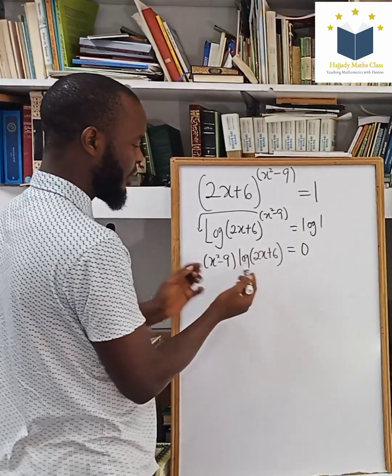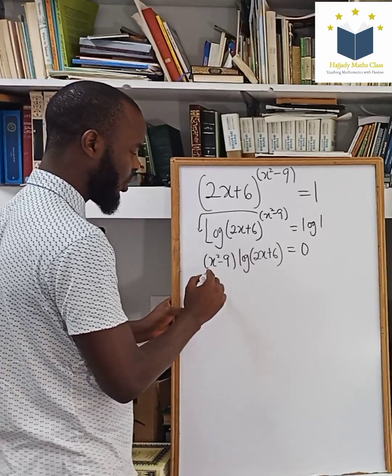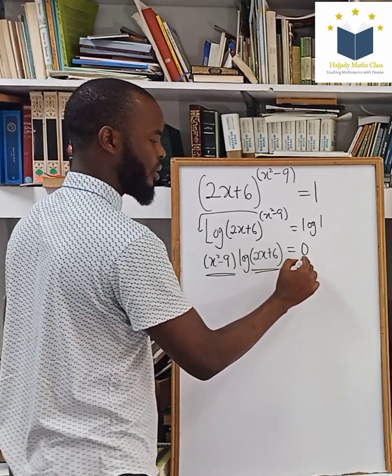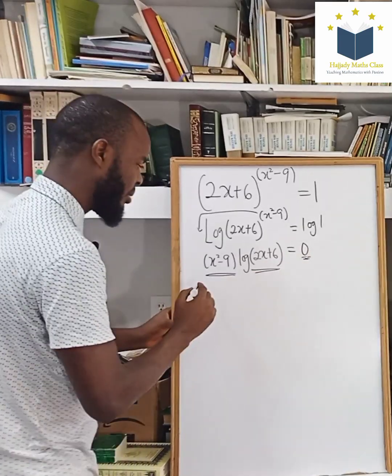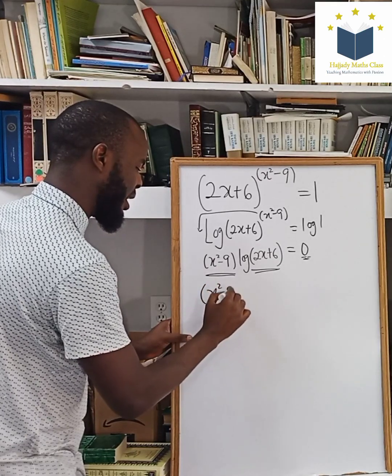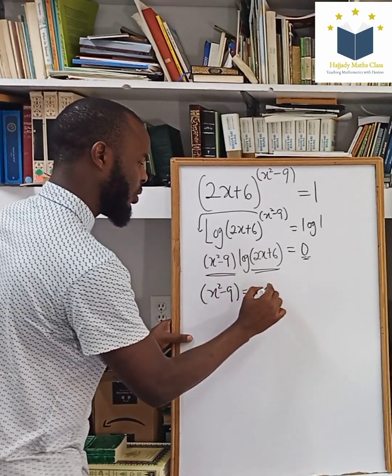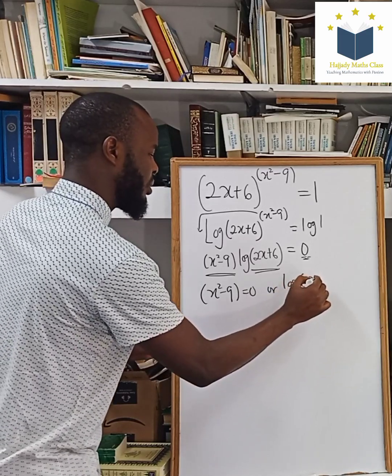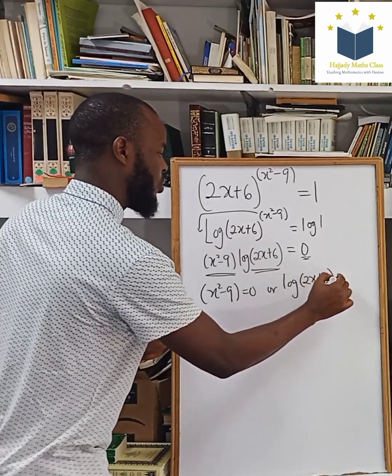We have this. We have two options. It shows that it's either this is equal to 0 or this equals to 0. So let's split that into two. So either you have x squared minus 9 equals to 0 or we have log 2x plus 6 equals to 0.